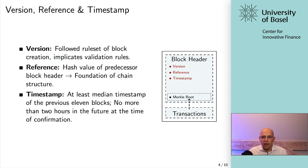That was component one — the Merkle root representing all transactions. Now, what else is part of the block header? You have a version number, which essentially is just the rule set by which blocks are assembled. This is really important in the context of forks — when you want to change the rule set, when there is an update or upgrade to the network where the rule set is slightly changed, you need a new version number to indicate in accordance with which rules this block was created.